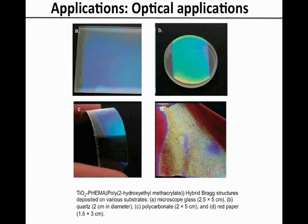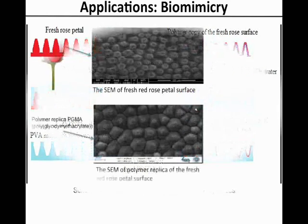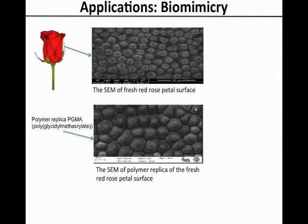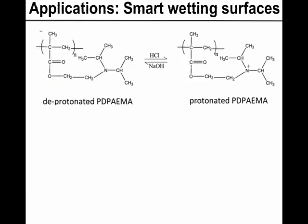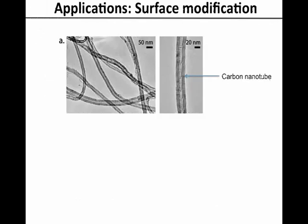Thin films with different refractive indices can be deposited with good thickness control, so the optical properties of surfaces can be tuned precisely. iCVD was used to deposit films having different refractive indices to mimic rapid colour changing structures in nature. The conformal nature of iCVD helps to make exact copies of natural surfaces through a two-step replication process. Biomimetic polymer sheets are templated from the fresh petal surface of the red rose and possess the same wetting characteristics. By using the same duplication process, many other natural surfaces can be copied into chemically well-defined polymer films or sheets. Surface modification down to the nanoscale can be achieved by iCVD, and multi-walled carbon nanotube (MWCNT) surfaces can be functionalised uniformly, expanding their application areas.